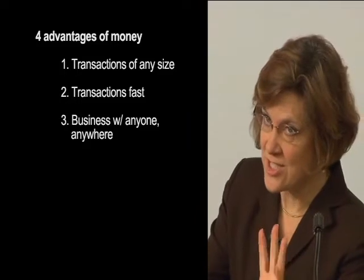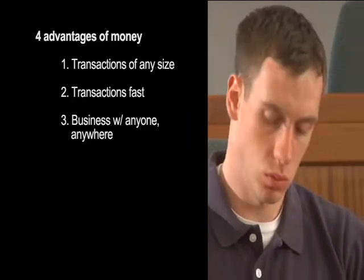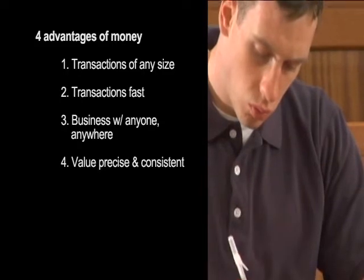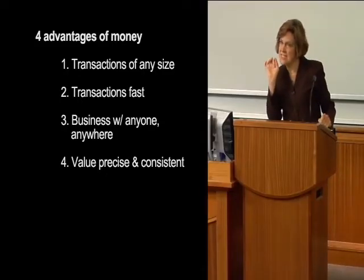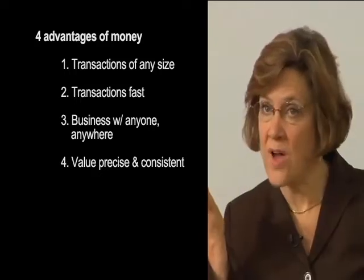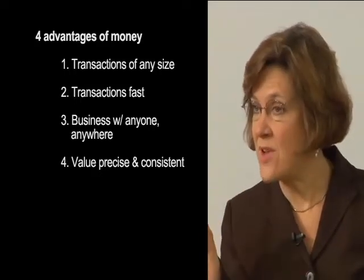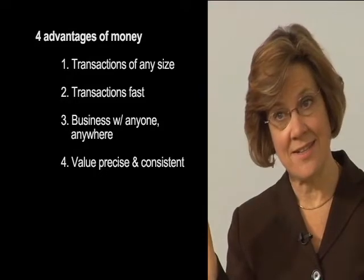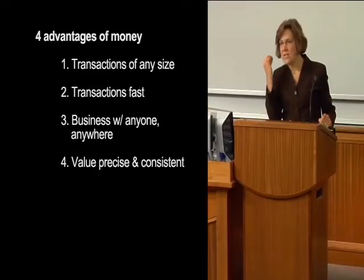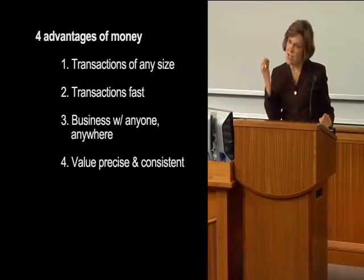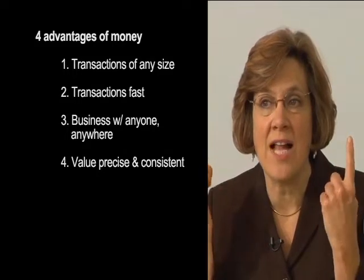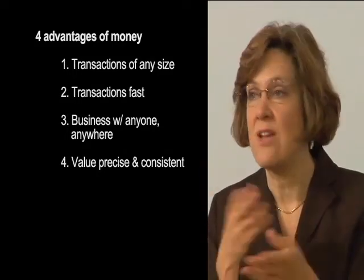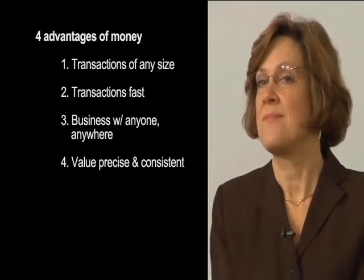The fourth advantage is that the value of money is precise and consistent. Precise means that the value of money can be determined in exact ways — $5.49 or $5.51. Money is also consistent because the value of $1 is $1. It isn't subjective. And even when the value of a currency fluctuates, it fluctuates for everyone.